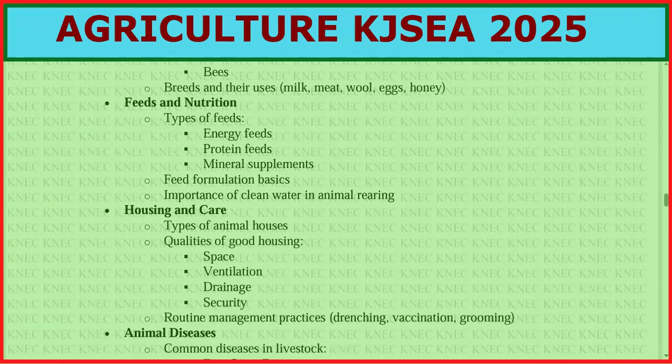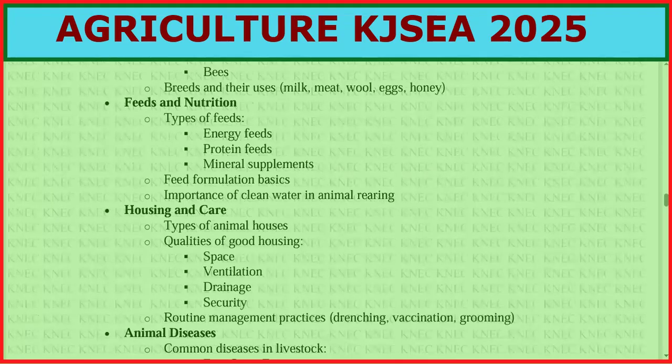For feeds and nutrition, cover types of feed — energy, protein, and mineral supplements — feed formulation basics, and the importance of clean water in animal rearing. For housing and care, cover types of animal houses and qualities of good housing: space, ventilation, drainage, and security. Also revise routine management practices such as vaccination, grooming, and deworming.